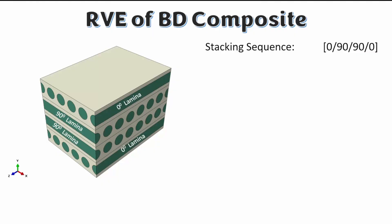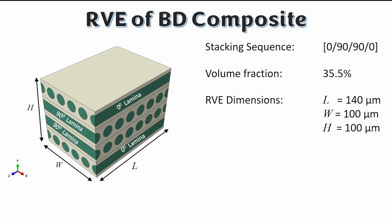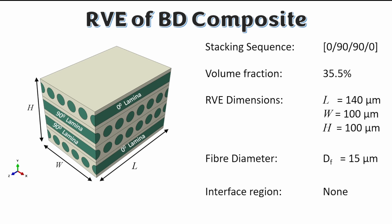What we have here is basically a stacking sequence of 0, 90, 90, and 0 degrees, where the 0-degree laminae are on the outside and the 90-degree laminae are on the inside. The volume fraction of this representative volume element is 35.5%, and the dimensions are 100 by 100 by 140 in the length direction. The fiber diameter is 15 microns and the effect of an interface region has been neglected.